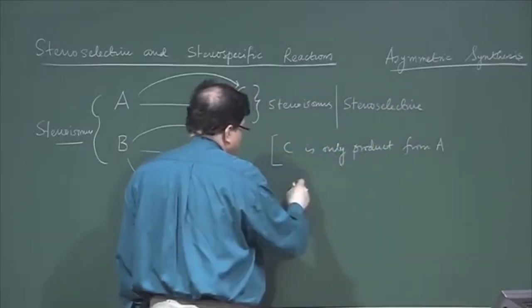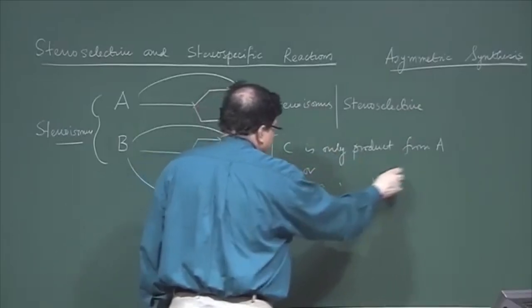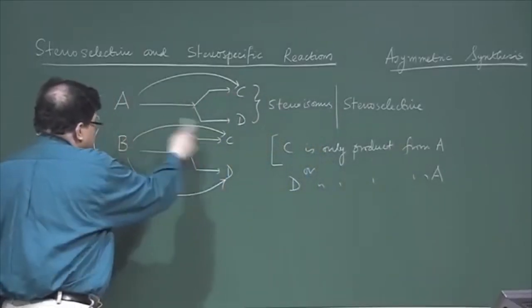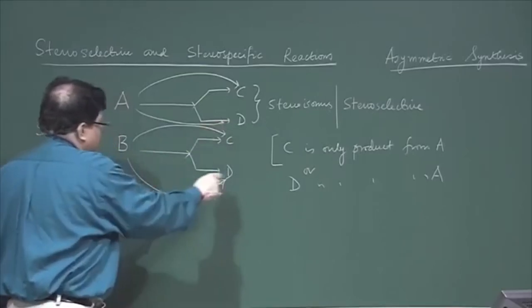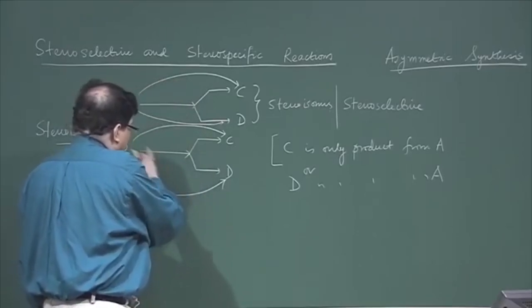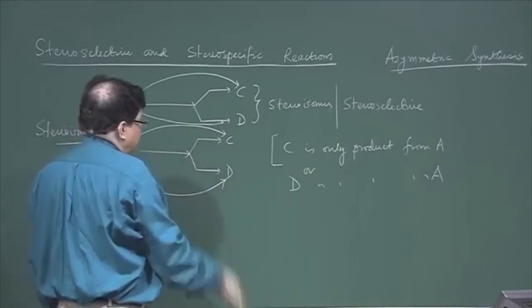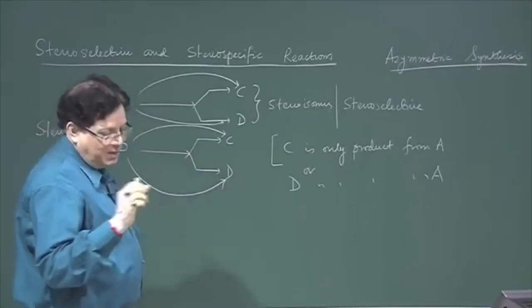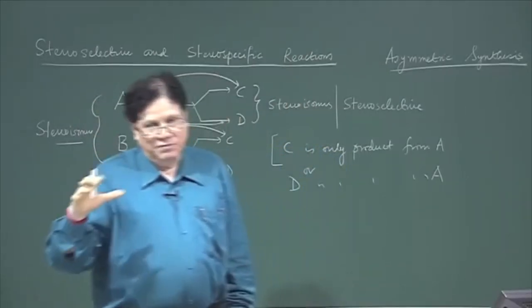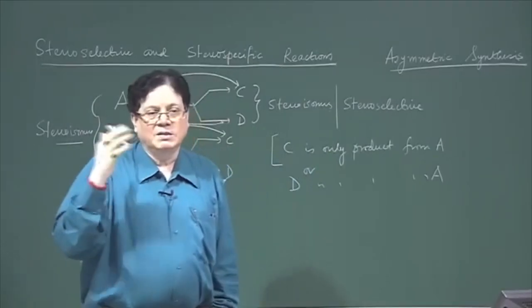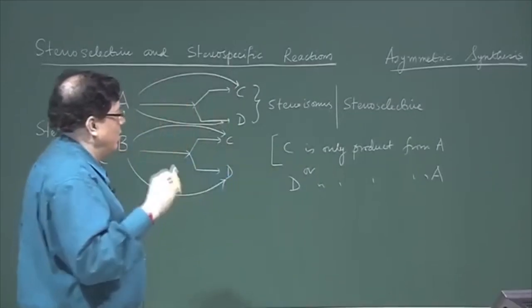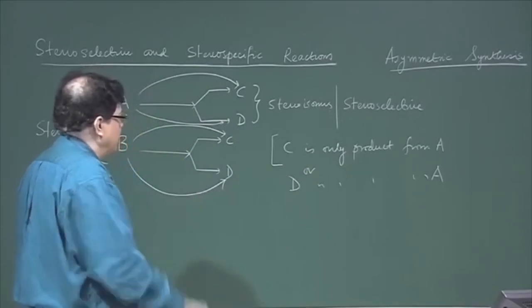It could be C is the only product or D is the only product — both are possible — but in both cases the reaction is stereoselective. Similarly, if B gives only C or only D and not both, then the reaction is also individually stereoselective with respect to B. So if I take one compound and from that compound there is a possibility of generation of different products related by stereoisomerism, and if only one product is obtained and not the other, that is called a stereoselective reaction.